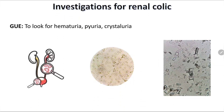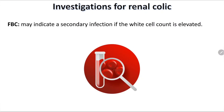Investigations for renal colic: you may send for a general urine examination, and in most cases you may see hematuria. Some patients get infected and have pyuria; crystalluria is also present. However, a normal general urine examination does not exclude the diagnosis — the diagnosis is mainly clinical.